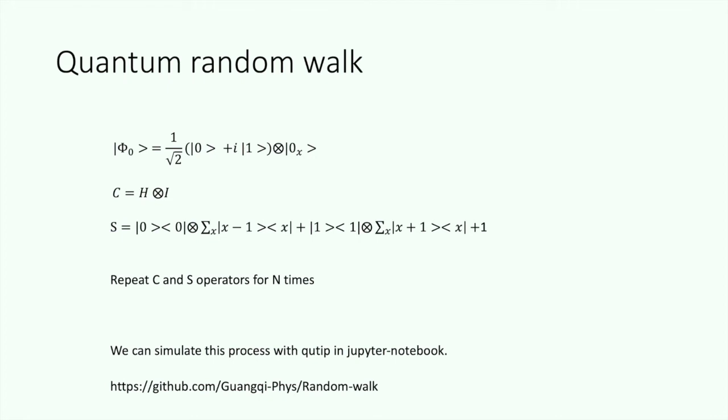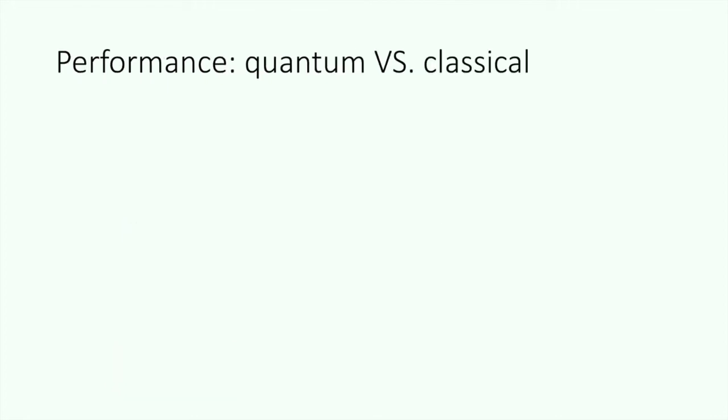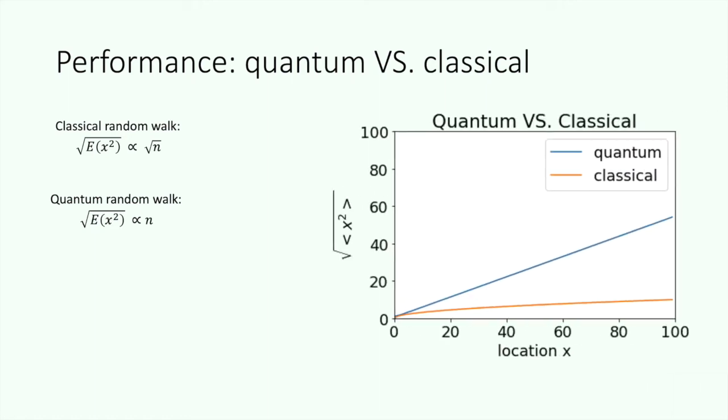Now let's look at the performance of quantum random walk. We already know that the standard deviation of classical case is proportional to square root of n. And with the simulation, we will find that in the quantum case, the standard deviation is proportional just to n. So in this 1D case, the quantum algorithm will give us a polynomial speedup.